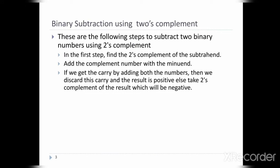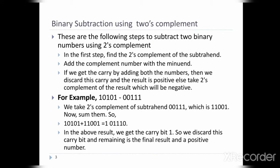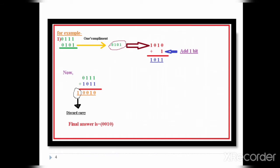For binary subtraction using two's complement, we follow specific steps. In the first example, we have two inputs: 0111 and 0101. The number being subtracted is the second input, 0101, which we reverse. After reversing 0101, the result is 1010.